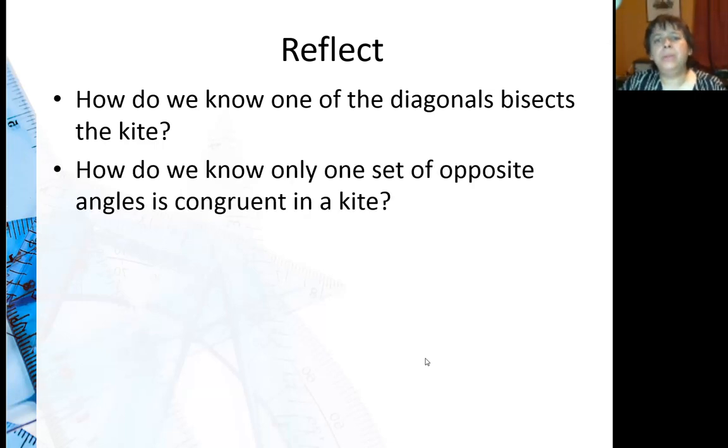How do we know only one set of opposite angles is congruent in a kite? Well, if two sets of opposite angles were congruent, that would make it a parallelogram. And we'll talk about those more later. And we know that kites are not parallelograms.